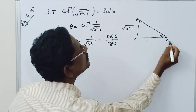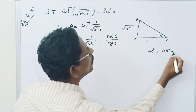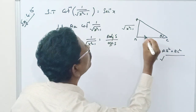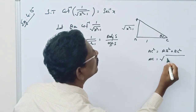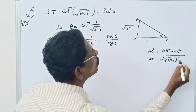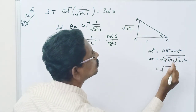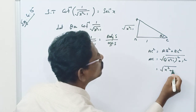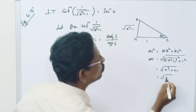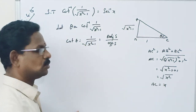Using the triangle ABC, AC squared equals AB squared plus BC squared. So AC equals square root of (square root of x squared minus 1) whole squared plus 1 squared, equal to square root of x squared minus 1 plus 1, equal to square root of x squared, equal to x.